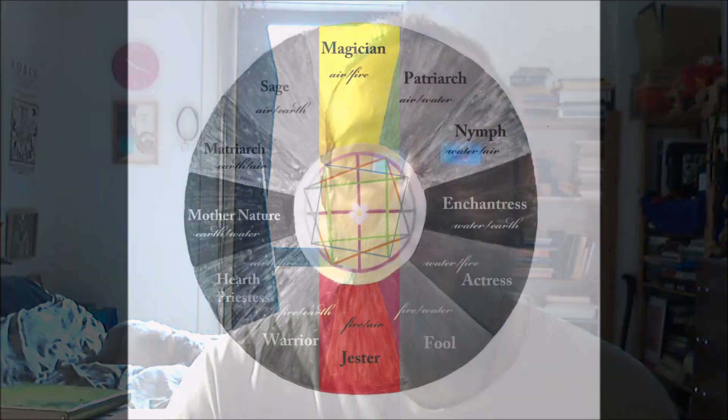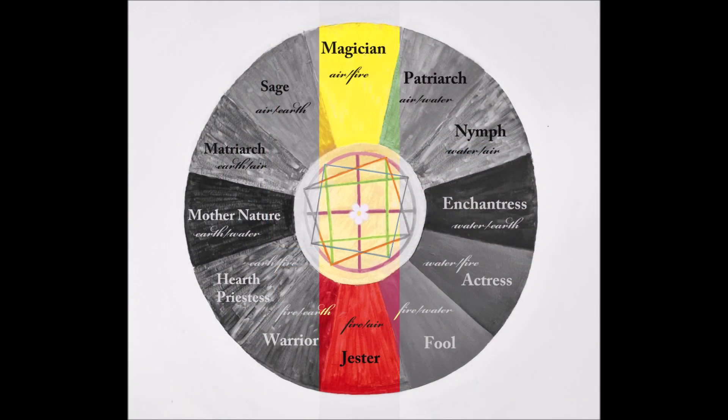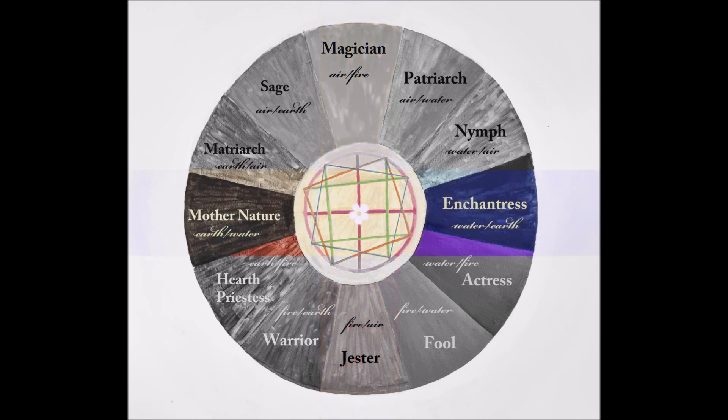What we've really found from this is a number of things. One thing that Brann really points out is that Fire and Water are very dependent upon each other and Earth and Water are very dependent upon each other. So the health of the Magician is very much dependent upon its relationship to the Jester and vice versa. The health of the Enchantress is very much dependent on her relationship to Mother Nature and vice versa.